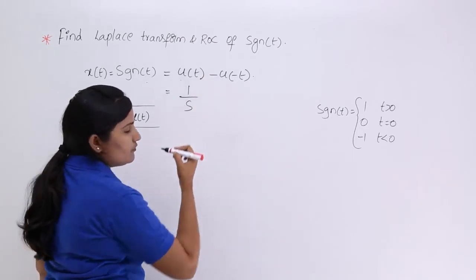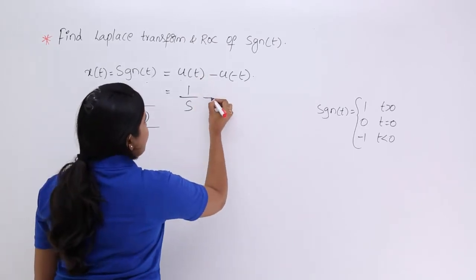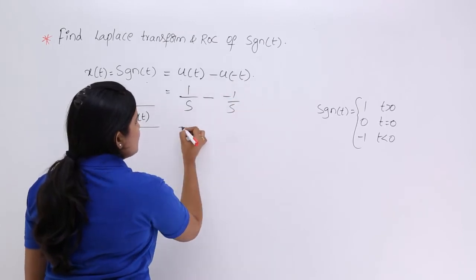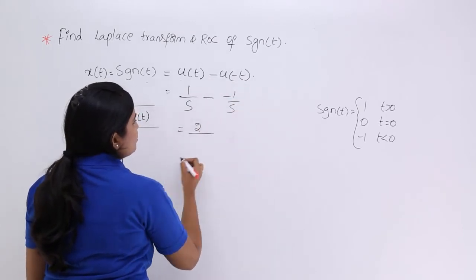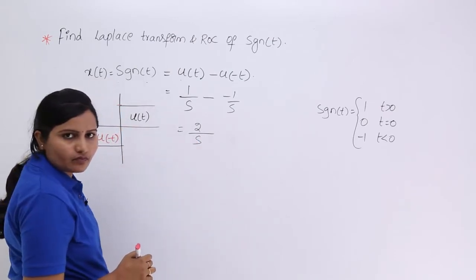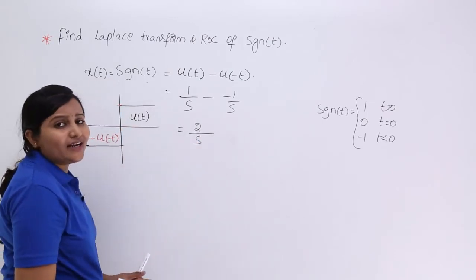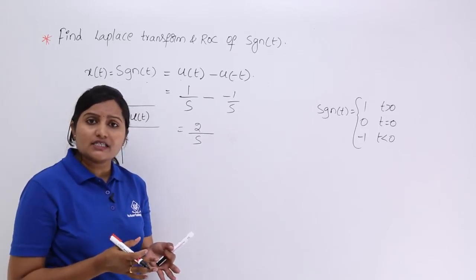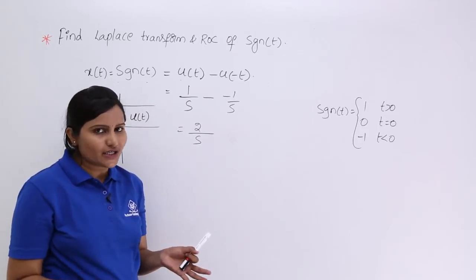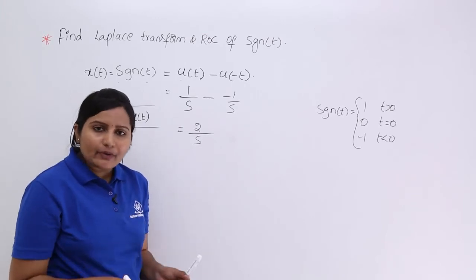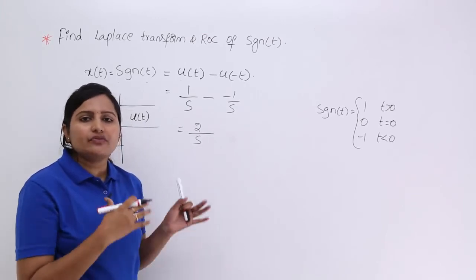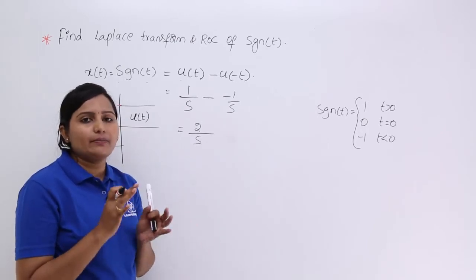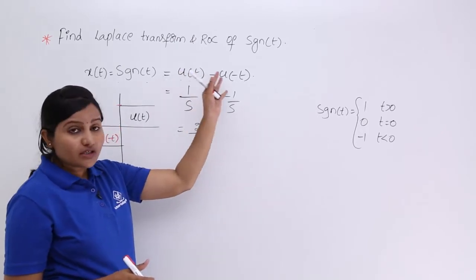Laplace transform of u(minus t) is minus 1 by s, so you will get 2 by s. In Fourier transform also, what you got as Fourier transform of signum function was 2 by j omega only. In Laplace transform, instead of j omega we need to put s. 2 by s will be signum function Laplace transform by using unit step procedure.